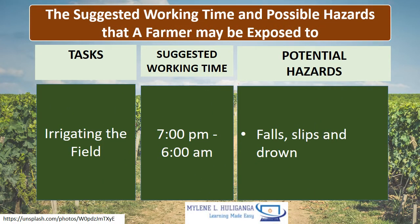Irrigating the field (nighttime). Suggested working time is 7 p.m. to 6 a.m. Potential hazards are falls, slips, and drowning.